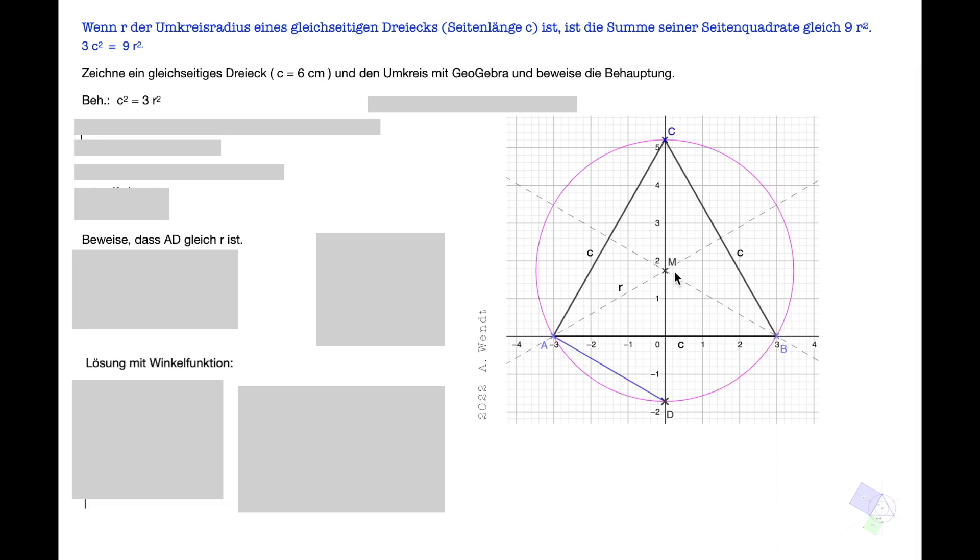Wie man den Mittelpunkt des Umkreises bekommt, hatte ich ja gerade gezeigt. Ihr zeichnet hier die Mittelsenkrechten auf diese Seiten, Schnittpunkt SM. Dann stecht ihr den Zirkel in M ein, spannt ihn auf MB auf und schlagt diesen Bogen.